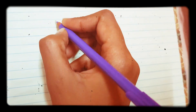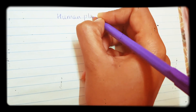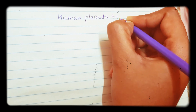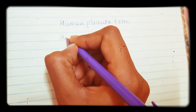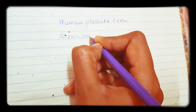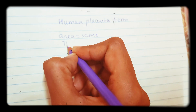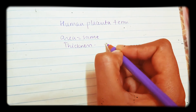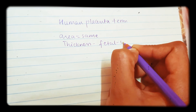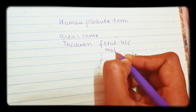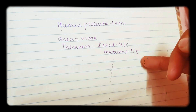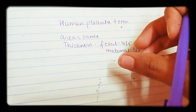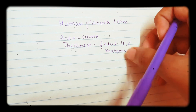We are going to start human placenta at term. If you see the human placenta on the fetal side and maternal side according to area, they are the same. But if you see according to thickness, on the fetal side it is four-fifths whereas on the maternal side it is only one-fifth. So according to thickness the fetal side is much thicker compared with the maternal side.